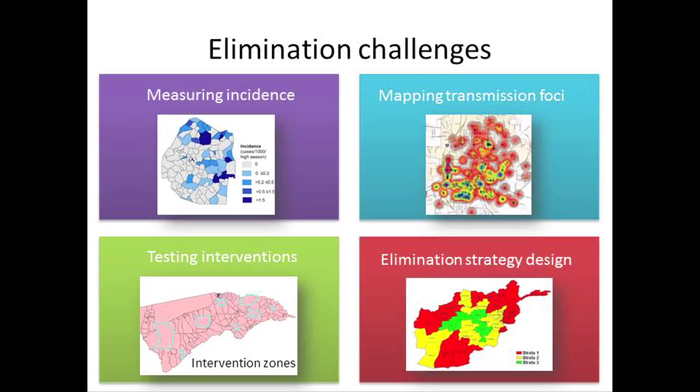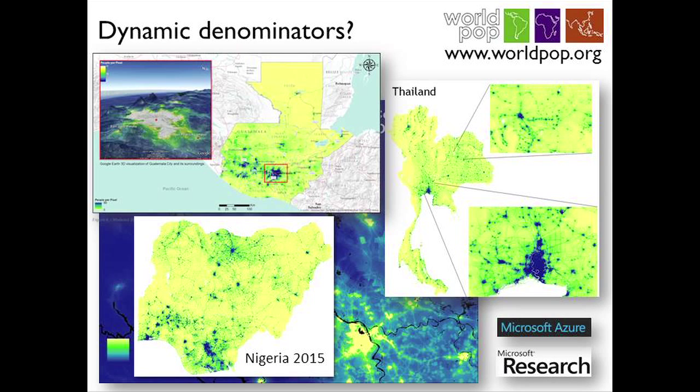Going back to those elimination challenges — measuring incidence. We talked about how denominators are actually quite dynamic. The WorldPop project has been doing a good job of mapping these denominators statically, increasingly scaled up with support from Microsoft, to provide detailed population maps. But they are a static picture, and we know populations move around a lot.